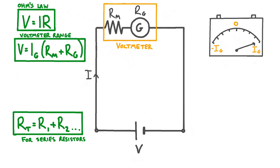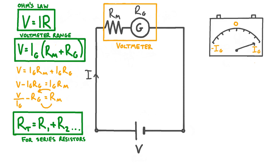We can get another useful formula if we rearrange this expression to make Rm the subject. To do this we start by multiplying out the brackets on the right-hand side to give us V equals IgRm plus IgRg. We can then subtract Ig times Rg from both sides of the equation, and then divide both sides by Ig. Finally, swapping around the sides gives us Rm equals V over Ig minus Rg. This expression tells us the size of multiplier resistor needed to build a voltmeter with a range of V using a galvanometer with resistance Rg and full deflection current Ig.